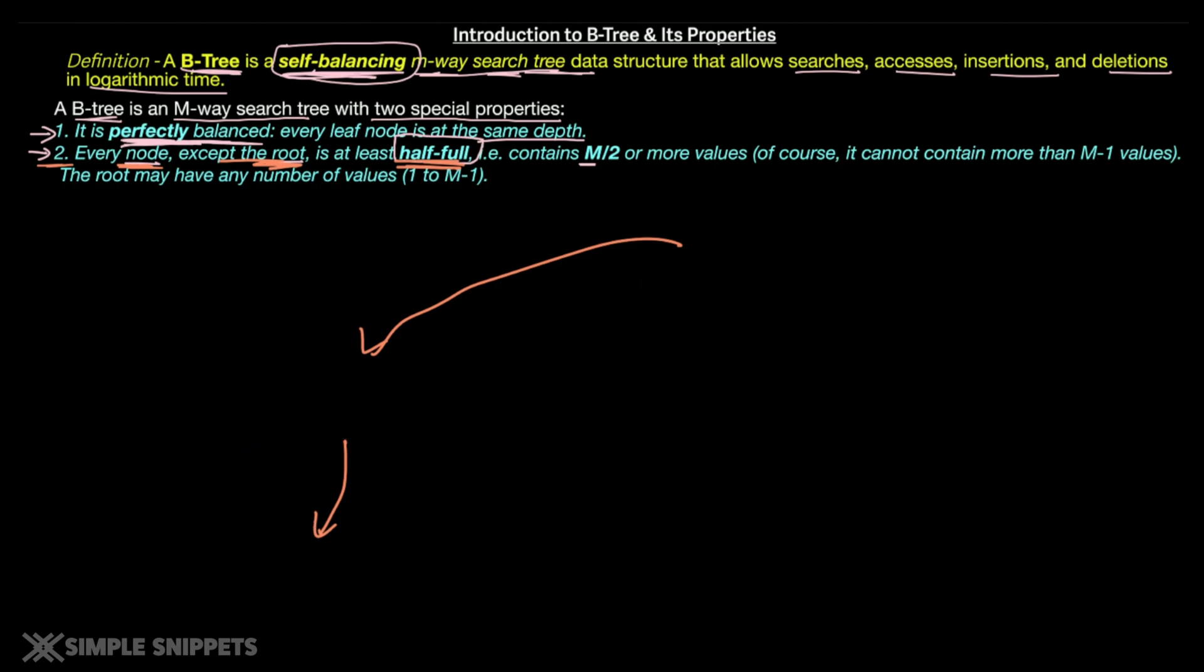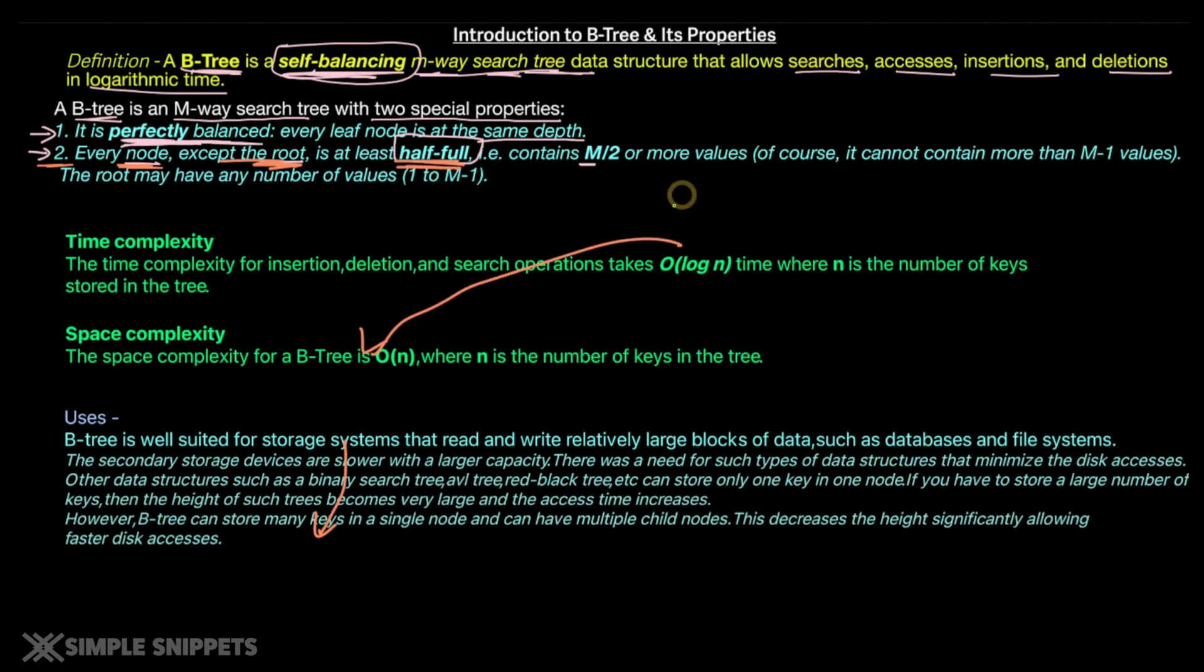So lastly just talking about the uses and its space and time complexity. We've already discussed what is space complexity, what is time complexity in 2 dedicated videos. Those are also very important. Please watch them. The time complexity for insertion, deletion and search operations takes O of log N time. And this is highly efficient. For those who know what is time complexity, this is much more efficient compared to O of N, that is linear time. So N is the number of keys stored in the tree, not the number of nodes but the number of keys. The space complexity of a B-tree is O of N, which is where N is the number of keys, again not node but the actual number of keys inside every node.